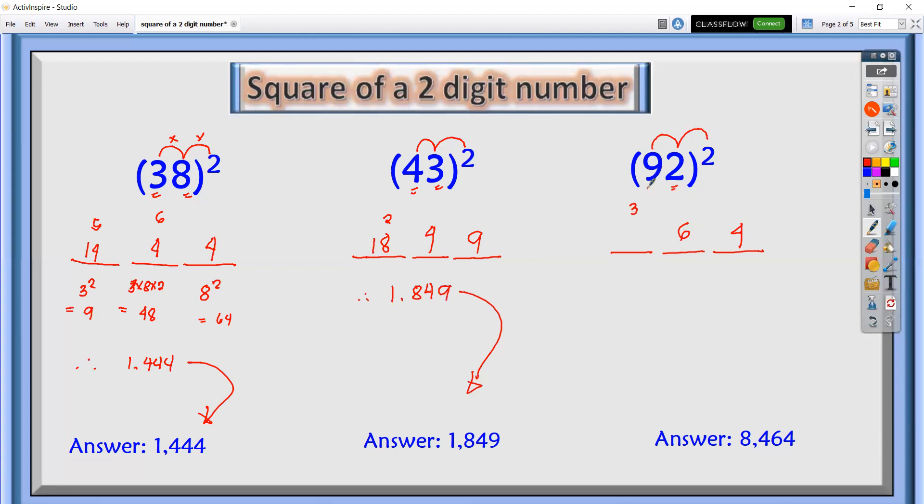Okay, square the first number. What is 9 squared or 9 times 9? It's 81. Plus 3, we have 84. So we got 8,464 and that's the answer.